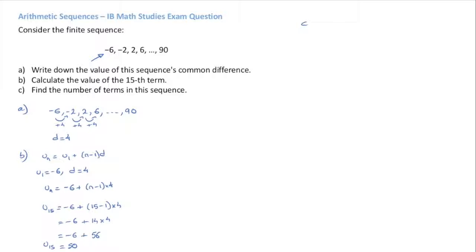Our last question here is very common in IB exams. We're asked to find the number of terms in this sequence. Well, because this is a finite sequence, it means there's a fixed or set number of terms in the sequence, meaning it has an end. We can see here in the question that the last term is 90.